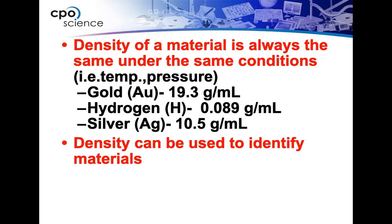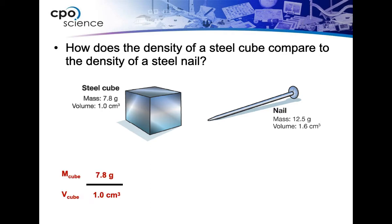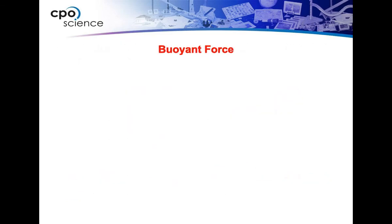These are characteristic properties, meaning they're not ever going to change — mass divided by volume will always come out the same. We can use density to identify materials. When you think about fool's gold, which is the mineral pyrite, all you have to do is calculate the density, because pyrite and real gold do not have the same density. For example, a steel cube with mass 7.8 grams and volume 1 cubic centimeter gives density 7.8 grams per cubic centimeter. A nail with mass 12.5 grams and volume 1.6 cubic centimeters gives the same number — because they're both made of steel. Density is a characteristic property and will not change.